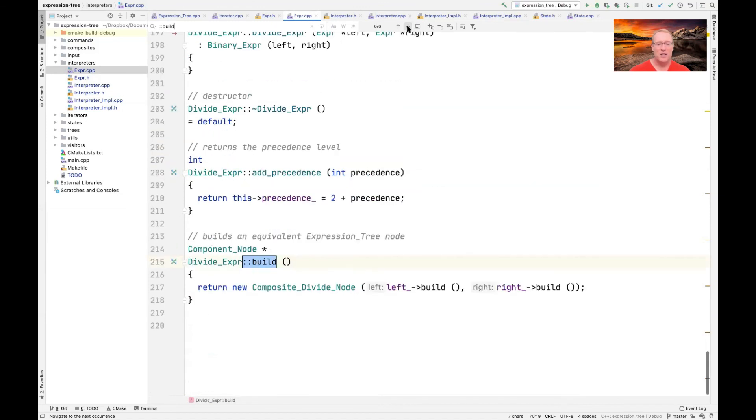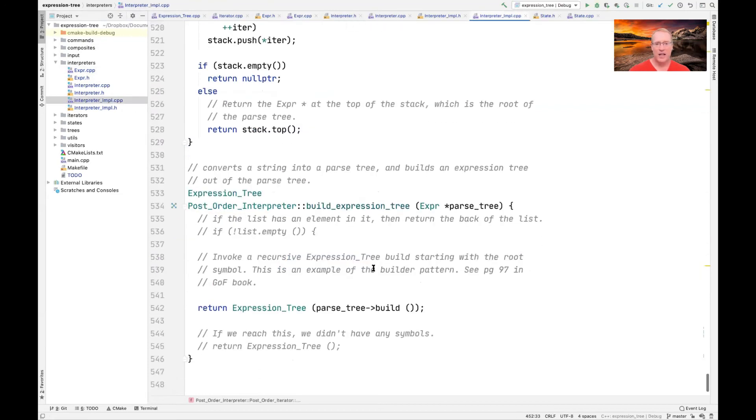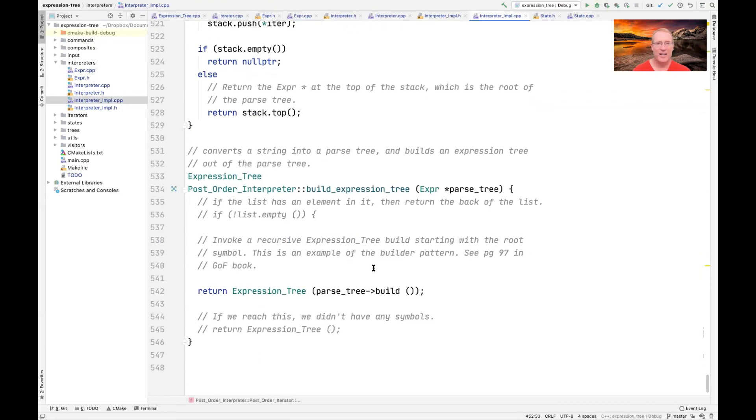But the cool part is that the pattern is what's giving us the guidance on how to name the method, how to arrange the inheritance hierarchy, and then how to set the wheels in motion back over here in the interpreter impl class with the build expression tree method.